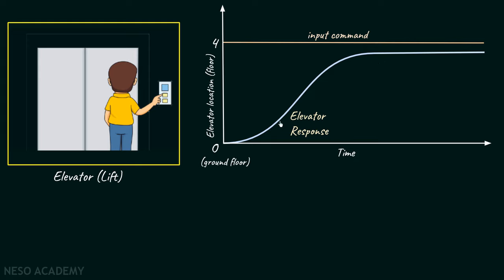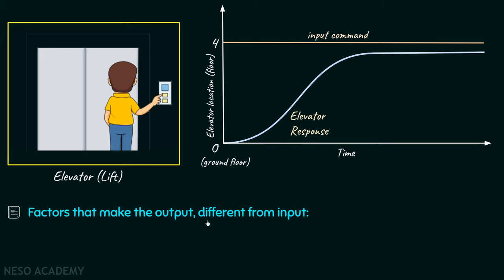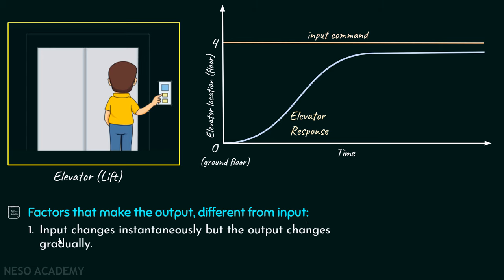We can observe that the elevator response is quite different from the input command, and this is due to two factors. The first factor is that the input changes instantaneously but the output changes gradually. When we push the fourth floor button, the input changes in an instant. But in response to that, the movement of the elevator takes some time to reach the fourth floor — it has to cross the first, second, and third floors before finally reaching the fourth floor. That's why the output response is quite gradual in nature.